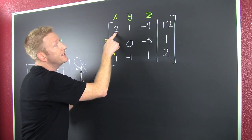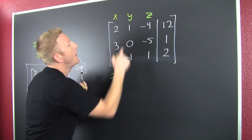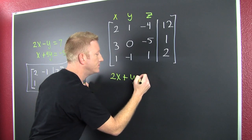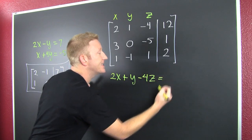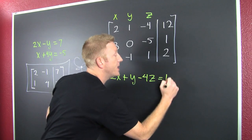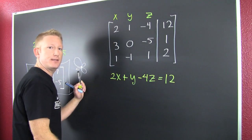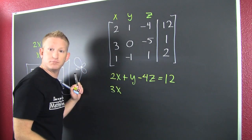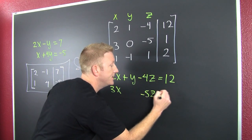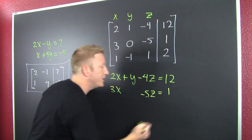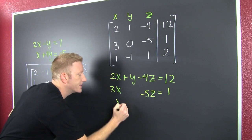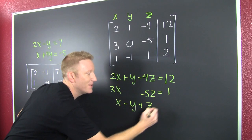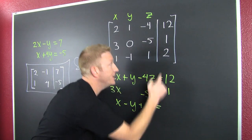Let's go. This is 2x plus 1y minus 4z, and that's going to equal 12. Next equation: 3x, no y, and then minus 5z, and that's going to be equal to 1. And for the next: 1x minus 1y plus 1z, and that's going to be 2.